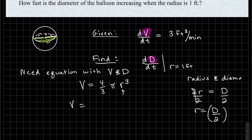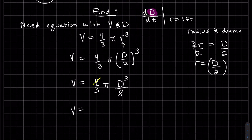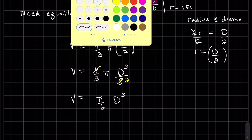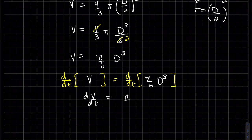After substituting r = D/2, we raise D/2 to the third power. To clean it up before taking the derivative: two to the third is eight, and four goes into eight twice, giving us V = (π/6)D³.